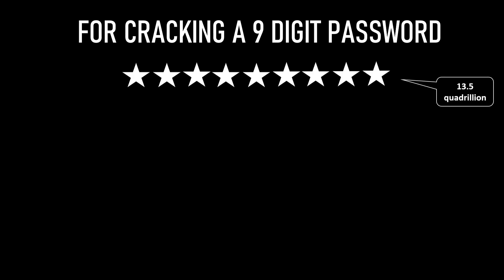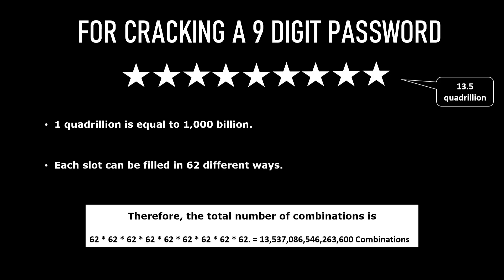For cracking a nine-digit password, the total permutations required are 13.5 quadrillion, and one quadrillion equals 1,000 billion. Just three additional digits caused the permutation count to grow enormously. That's why it's always recommended to choose a lengthy password and include as many uppercase, lowercase, and special characters as possible.